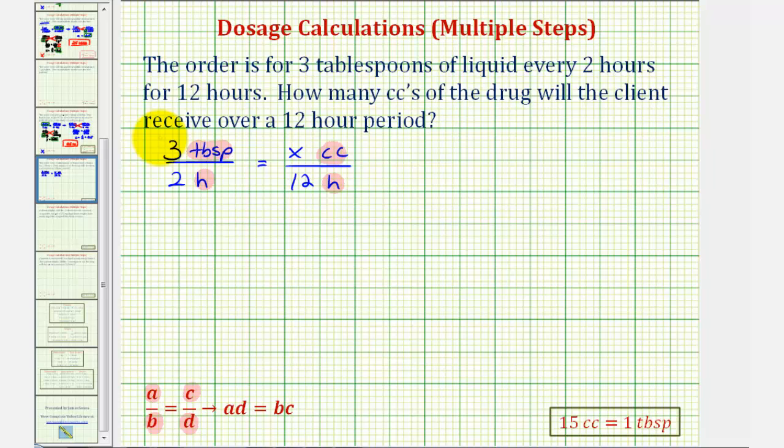Let's take three tablespoons and convert this to cc's. To do this conversion, we'll use another proportion, where three tablespoons to an unknown number of cc's (we'll call it y cc's) will be equal to our conversion that fifteen cc's equals one tablespoon. So we'll have one tablespoon to fifteen cc's.